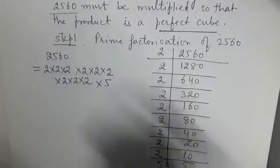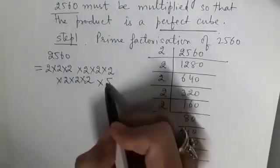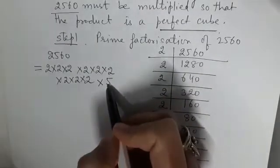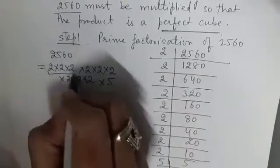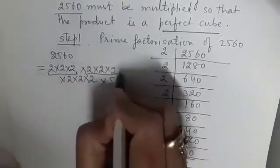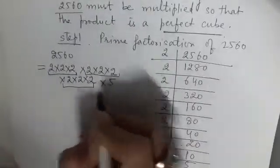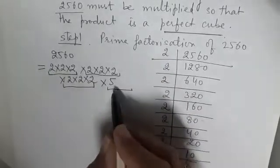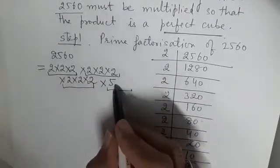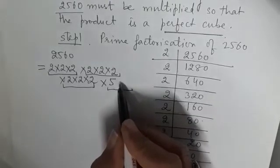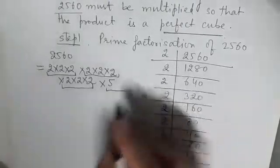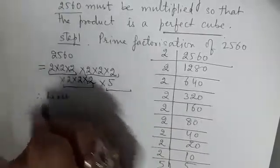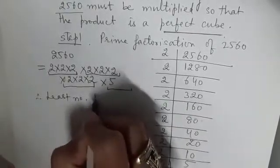We have to multiply 2560 by the smallest number so that the product is a perfect cube. We make triplets of the same number. For the nines 2s, we already have three triplets. For 5, we only have one, so we need to multiply by 5 × 5 to complete the triplet.